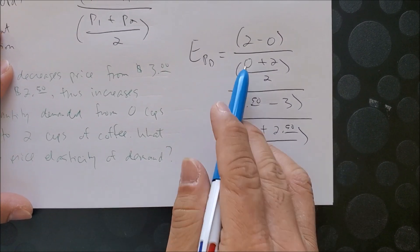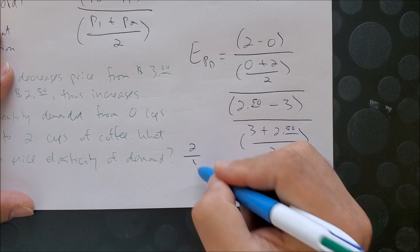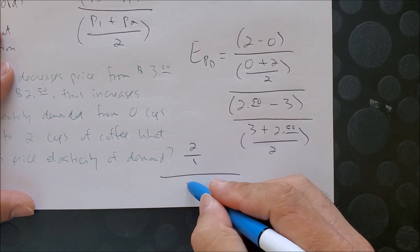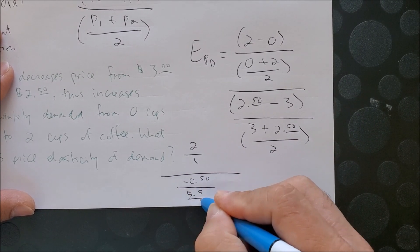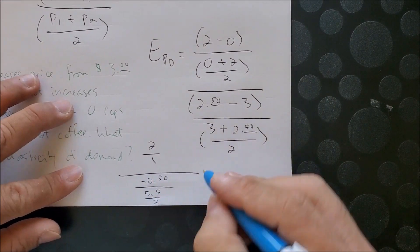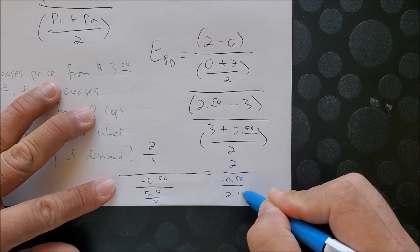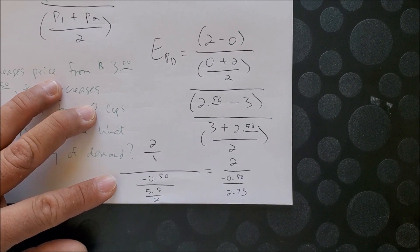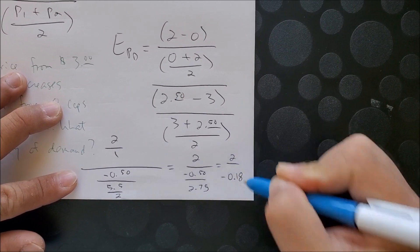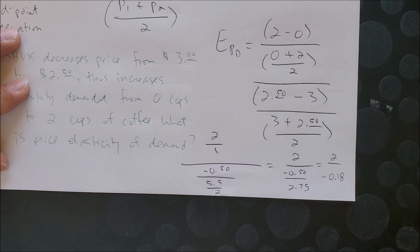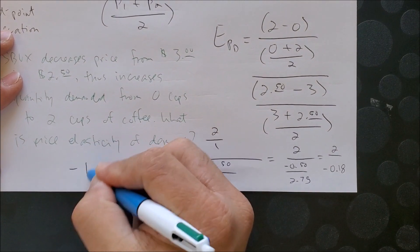Now we can solve the equation. The numerator gives us 2 over 1. For the denominator, we have negative 0.5 over 5.5 over 2. The numerator becomes 2 over negative 0.5 over 2.75. Simplifying further, we get 2 over negative 0.18, which gives a final answer of negative 11.11.